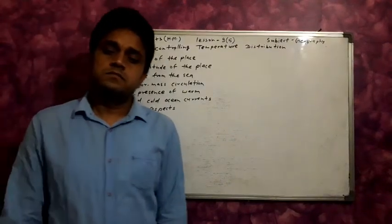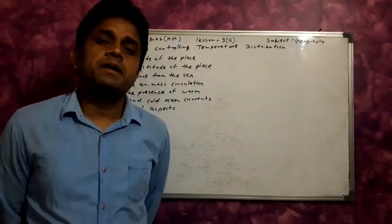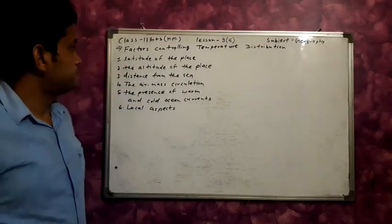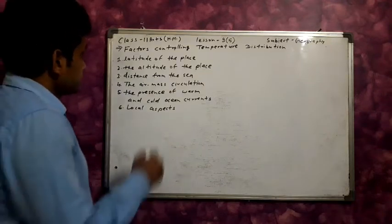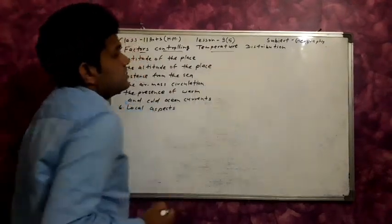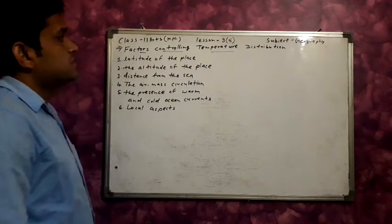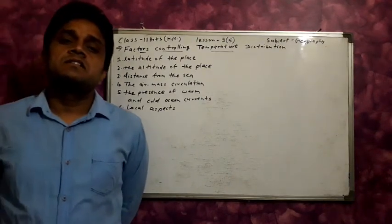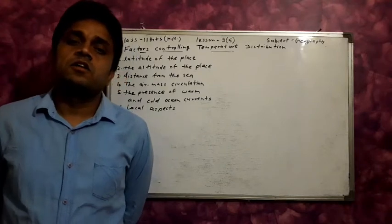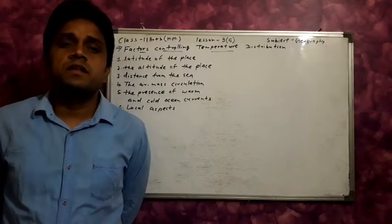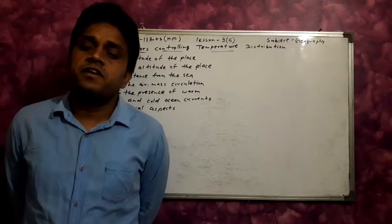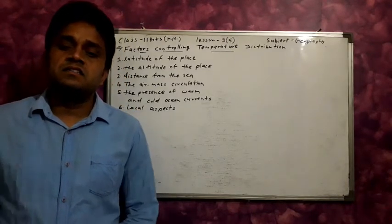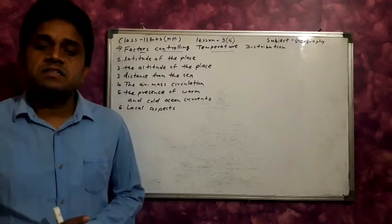Good morning students. Today the topic is temperature, and we will discuss the factors controlling temperature distribution. The total heat or temperature received by the insolation — the interaction of insolation with the atmosphere and the earth's surface — creates heat, which is measured in terms of temperature.